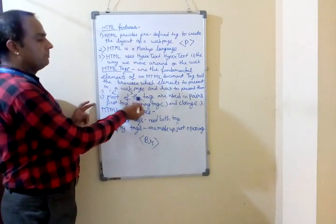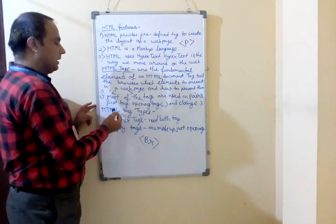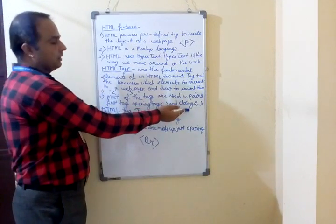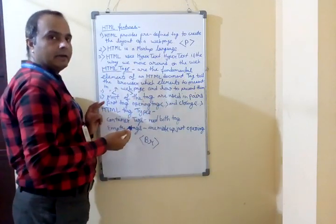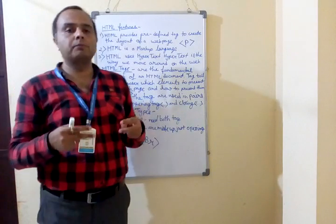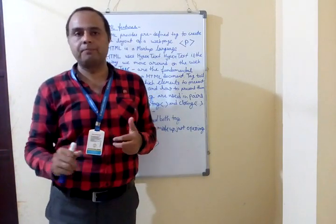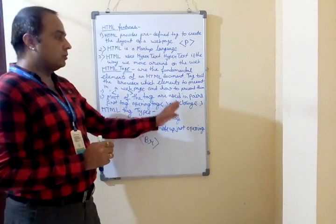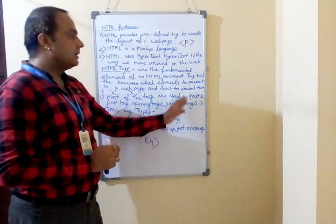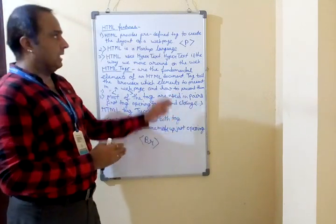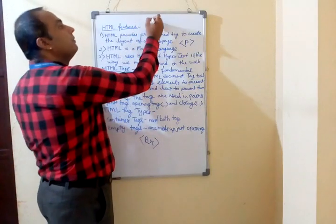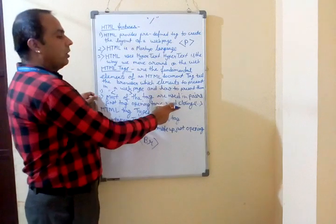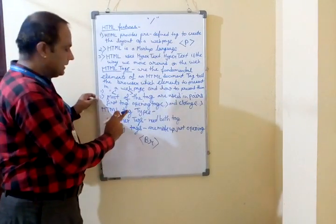Most of the tags are used in a pair: the first is the opening tag and the second is the closing tag. The opening tag means simply writing the tag name inside angle brackets. For the closing tag, before writing the tag name, we use a forward slash sign. This forward slash is used for closing the particular tag.